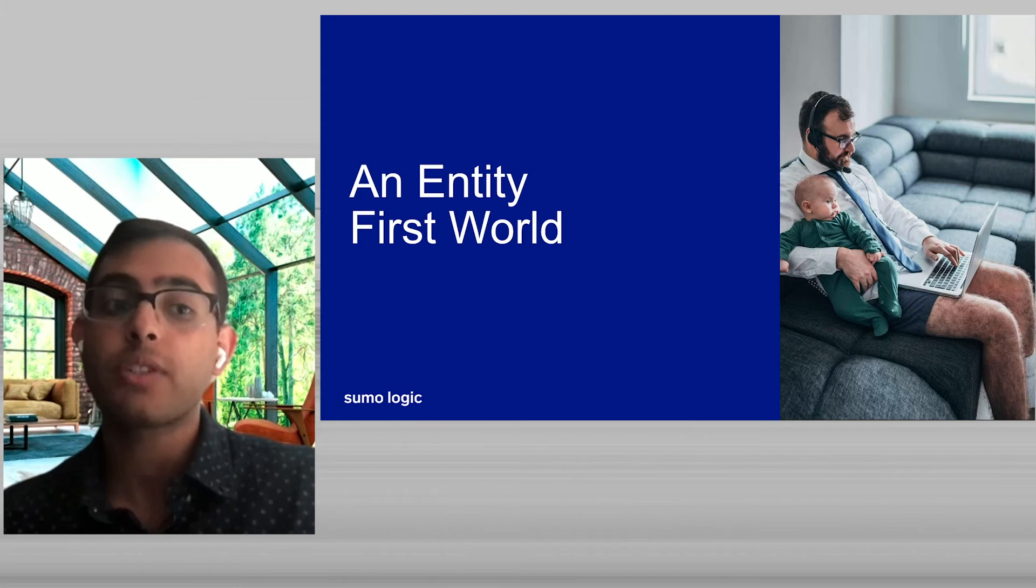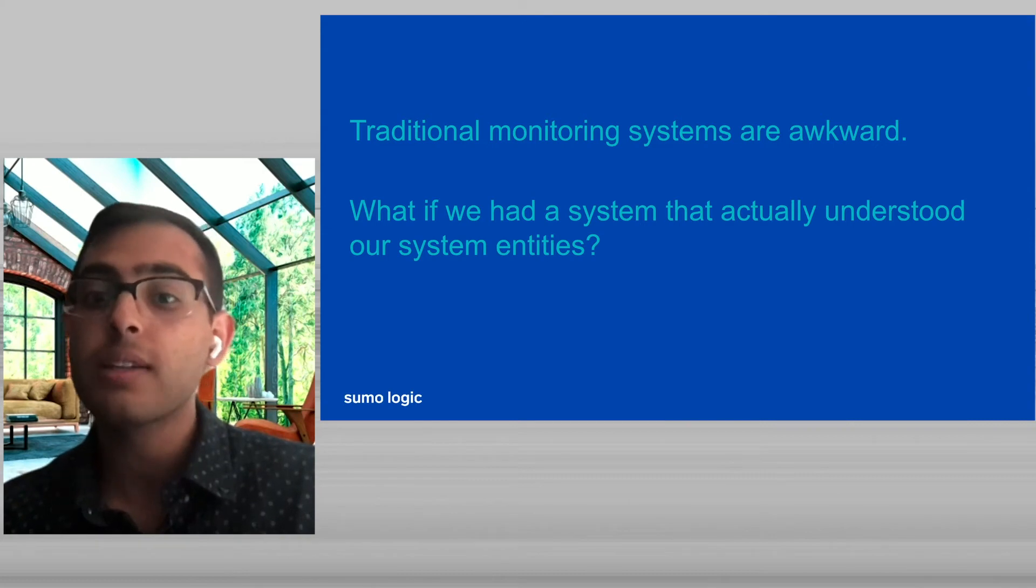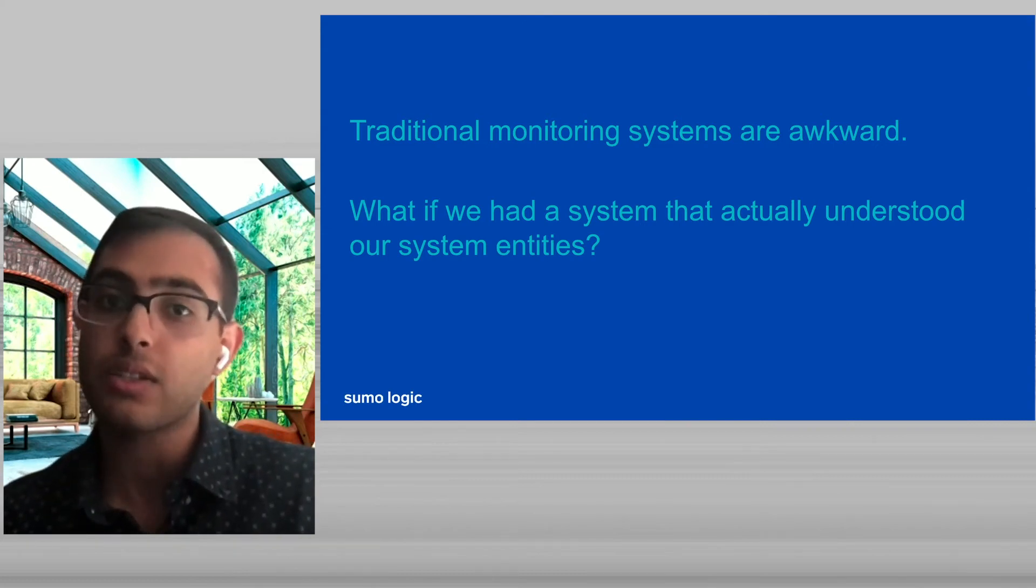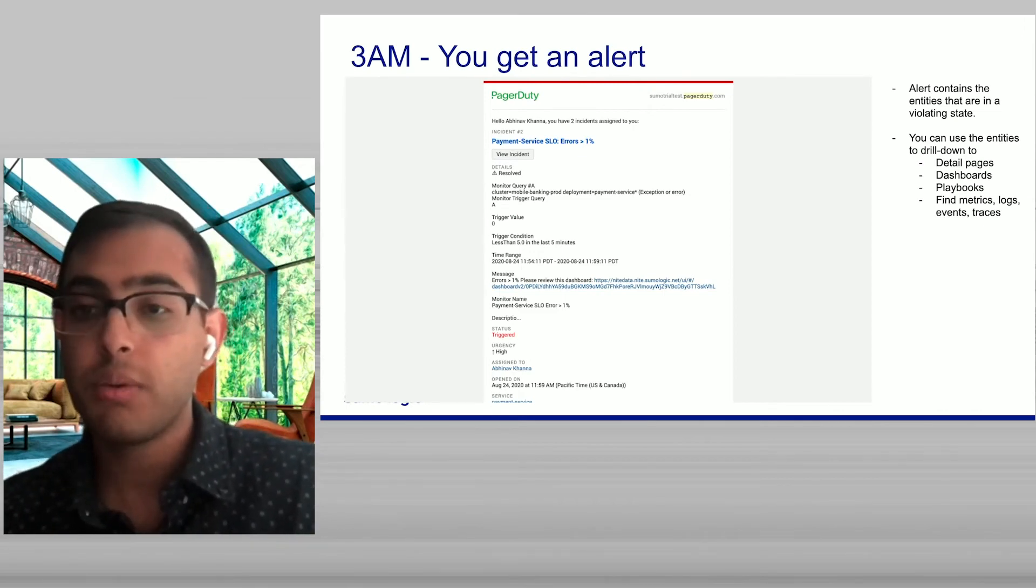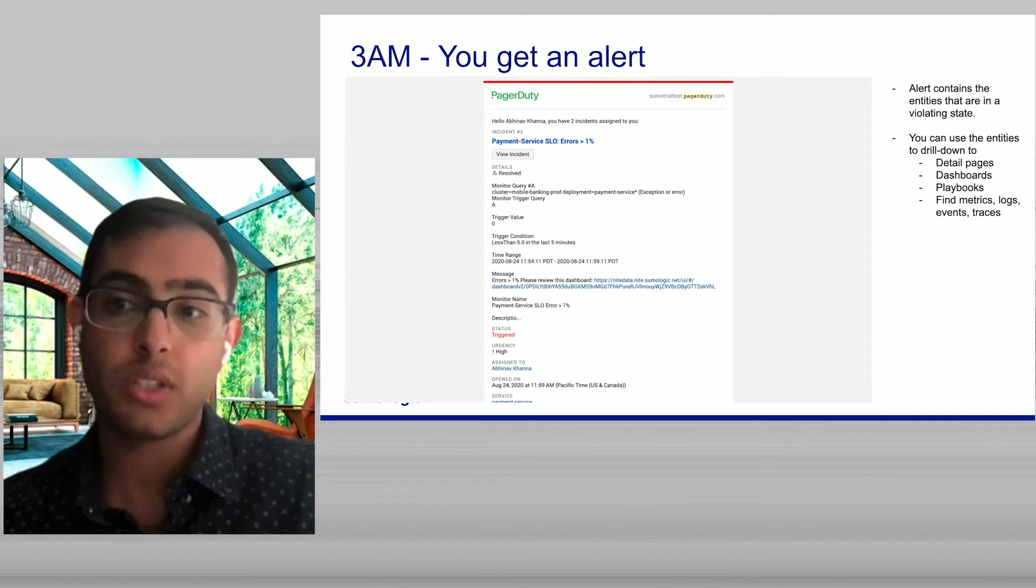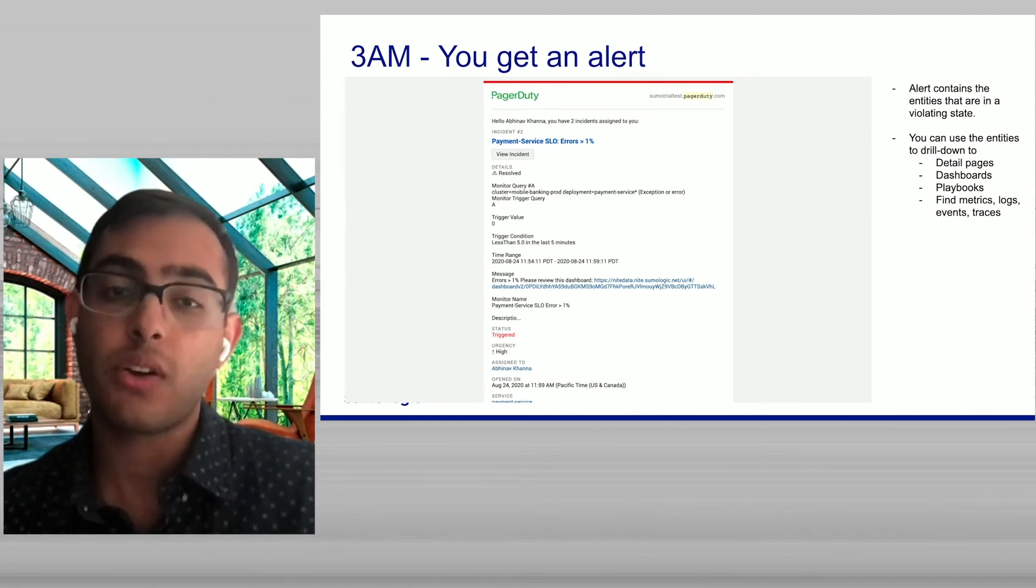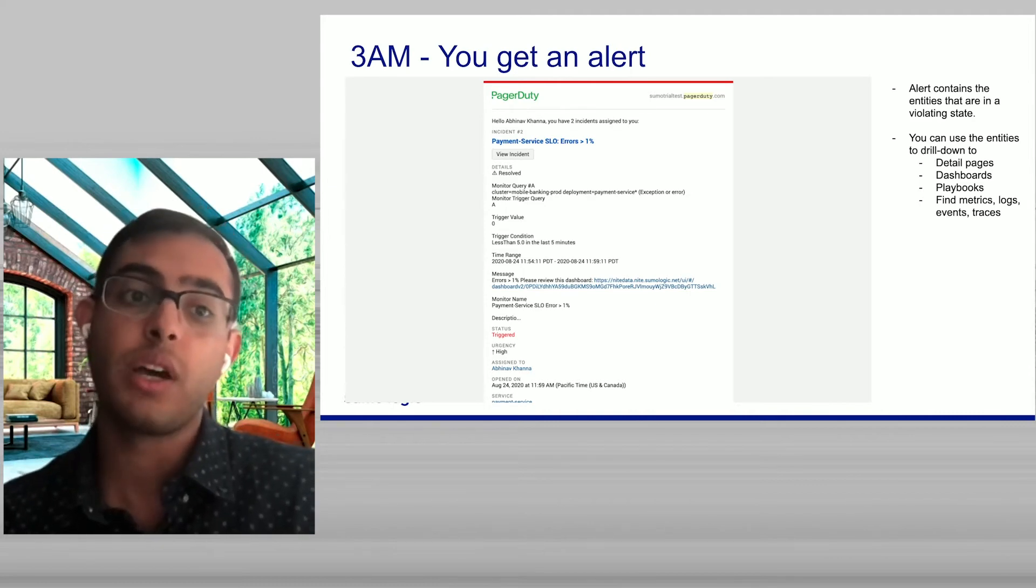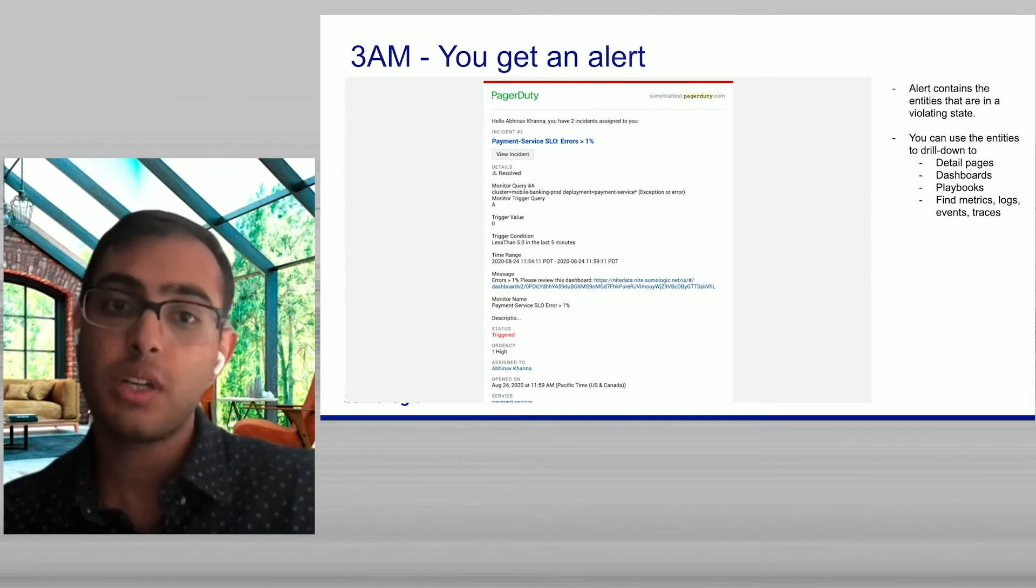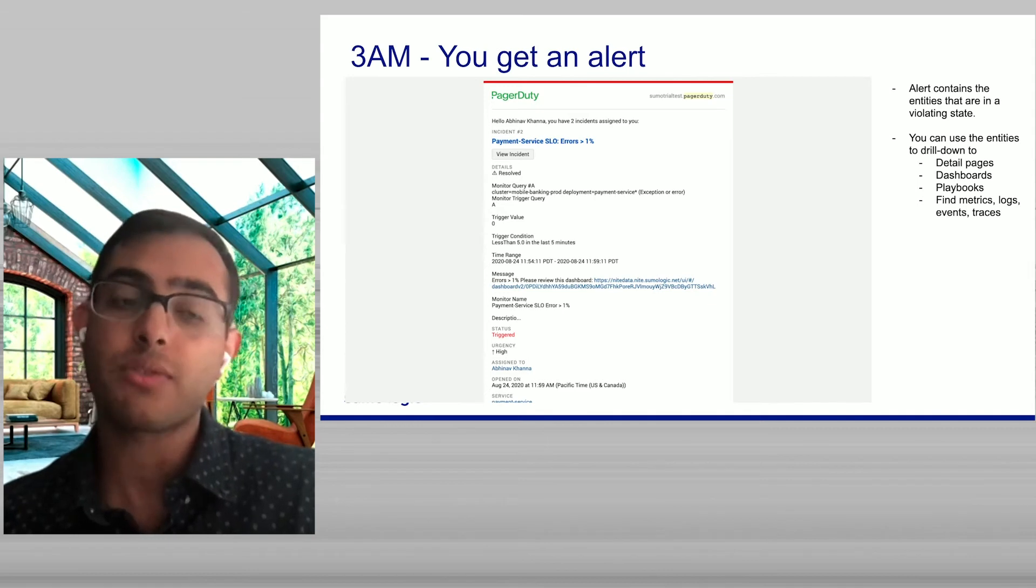So let's talk about what happens if you actually have an entity-first world. Traditional systems are awkward. What if we had a system that actually understood our entities at its core? So you'd get an alert at 3 a.m., no different than the starting point we had before. But now you're able to ask much better questions about that alert. Firstly, if the alert already contains the entities that are in a violating state, it's already done the translation to the system components that are impacted. I can now use those system components to drill down into the underlying questions I had earlier. Things like detailed pages about those entities, dashboards, playbooks, even the underlying raw data streams. So I'm not at a loss from anything I had before.